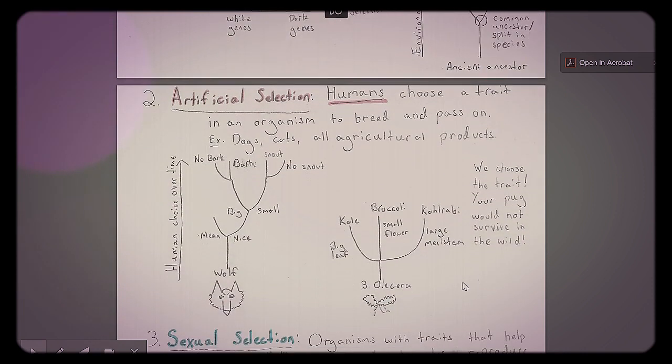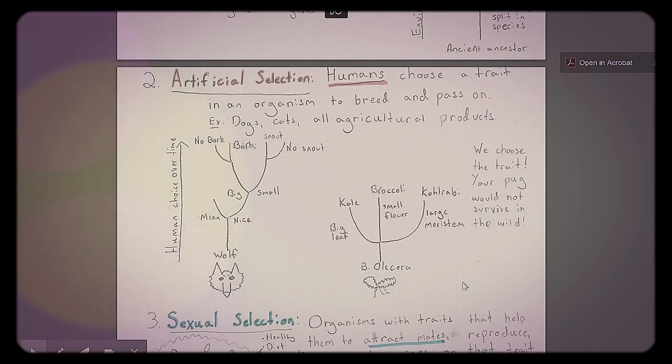Another type of selection that can cause evolution is artificial selection. And so it's artificial because humans cause or choose this trait. It's what we want to have happen. So it's different. So fitness is determined differently. So, for example, we've done this to pretty much everything we've gotten our hands on. Animals, agriculture, everything that you eat from the grocery store has been modified by us. There's nothing that's really just wild that you consume.